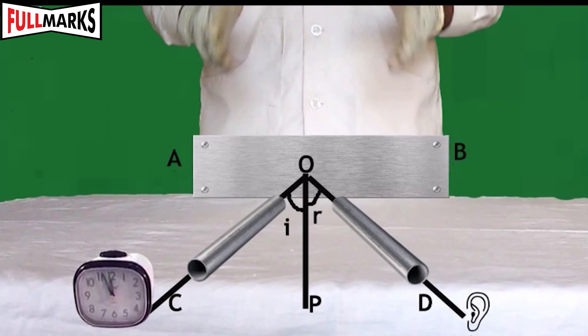Now draw a line OC making an angle of 30 degrees with the line OP. Place one metal tube near to the point O of normal and metal plate on the line OC. Place the ticking watch closer to one end of this metal tube.